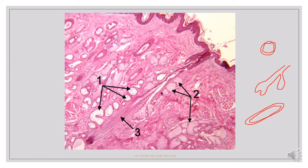Depending on how they lay when the tissue was sectioned, if the follicle laid in a longitudinal plane, it will appear elongated, just like what we are seeing here. If it laid in a transverse plane, it appears round. And if it laid in a slant plane, it appears oval or slanted. So any of these three planes of appearance still represents the hair follicle.